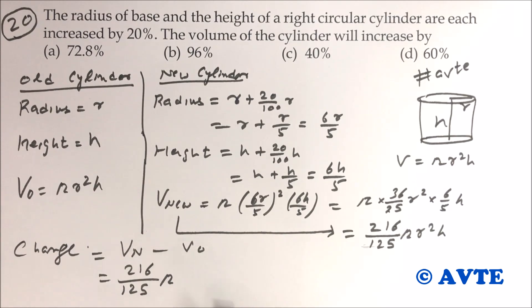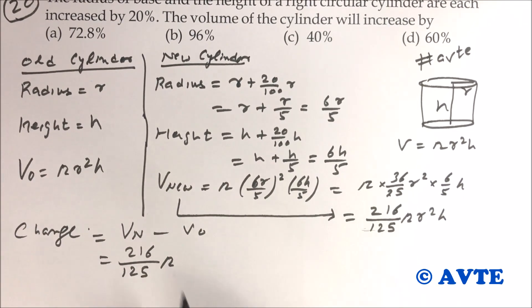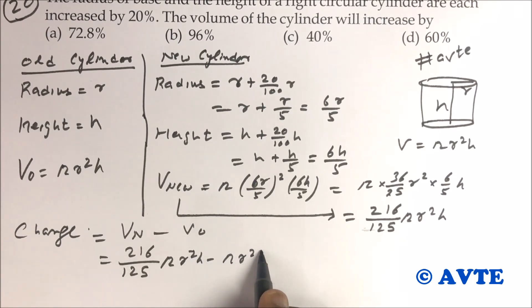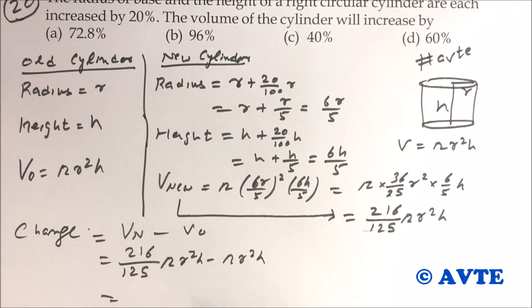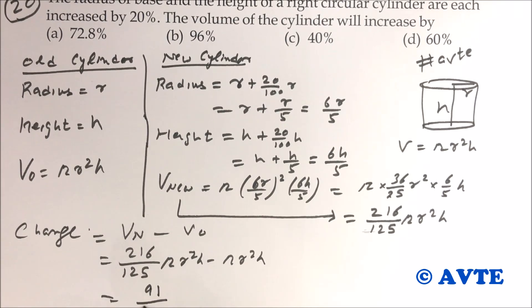Change in volume is volume of new minus volume of old. That is 216 upon 125 pi r square h minus pi r square h. If you take LCM, that is 125.